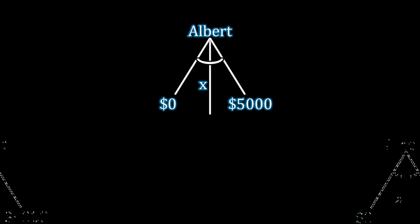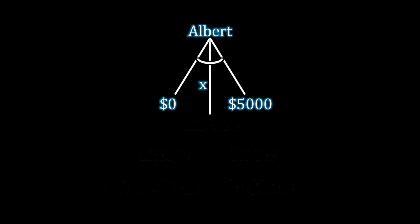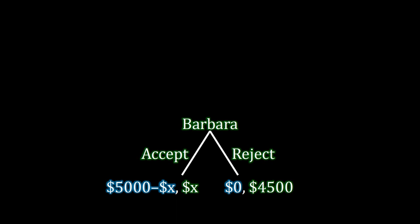The bottom half is Barbara's move. Instead of having that arc like Albert had, Barbara has just an accept or reject decision. In the discrete version of the Ultimatum Game, Albert can offer $0, $1, $2, $3, all the way up to $5,000 — so this arc summarizes a whole bunch of different possible situations Albert could choose from. Barbara sees the offer from Albert and, based on that offer, chooses whether to accept or reject.